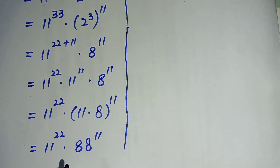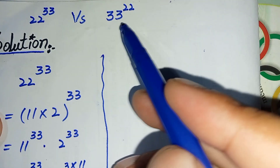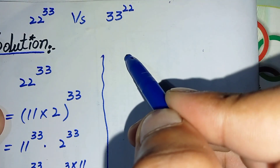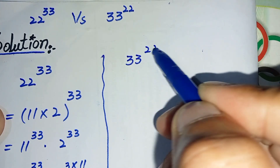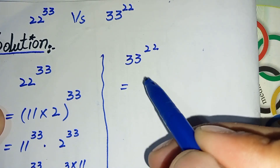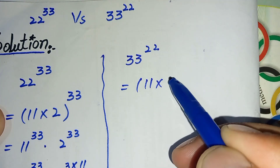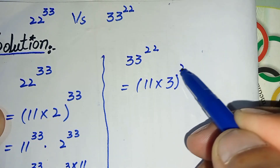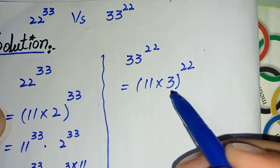This is the simplified form of 22 to the power 33. Now we will simplify the second number, 33 raised to the power 22. In the next step we can write 33 as 11 times 3, whole raised to the power 22.